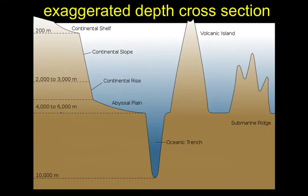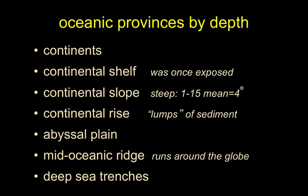By way of review, here's that exaggerated cross-section of the ocean. We talked about the continental shelf, the continental slope, the continental rise, and the toe of that slope. Then the plain is punctuated by trenches and islands. Much of the shelf with different sea levels was probably exposed — just like the Santa Monica Mountains, the Oxnard Plain, etc. The continental slope is on average about four degrees, so it's a pretty even, homogeneous slope most of the way down.